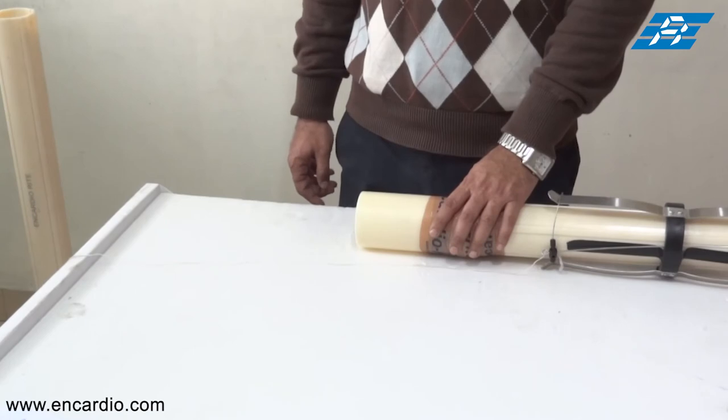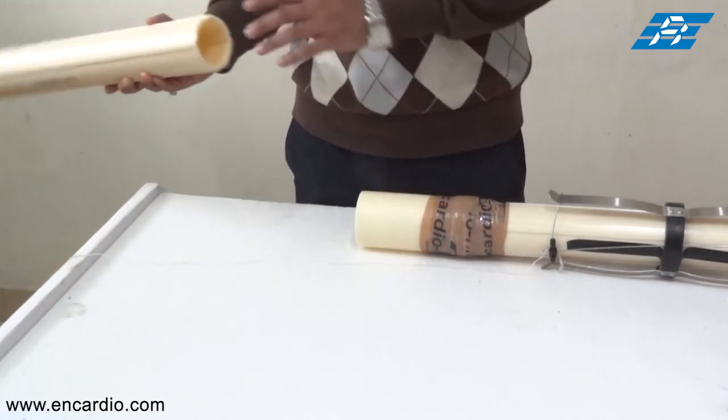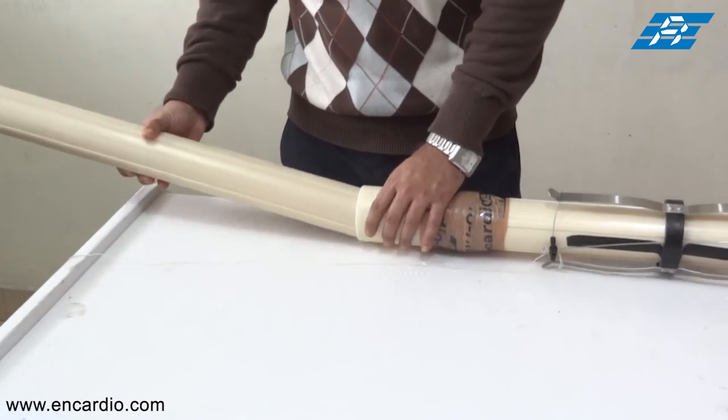On the other side of the coupling, fix the next pipe and follow the same procedure for fixing as shown earlier.